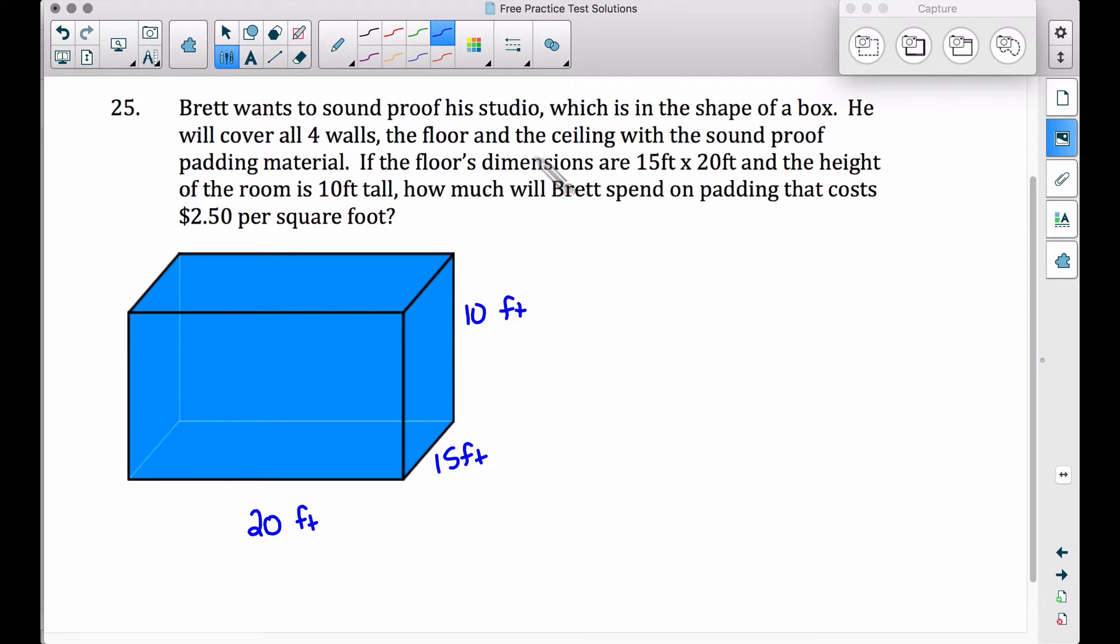What we're really trying to find here is the surface area. What's the area of all six surfaces? There are six surfaces. You have four walls that go around the side, you have a ceiling, and you have a floor.